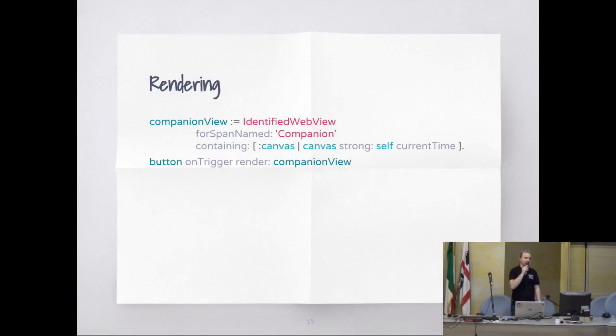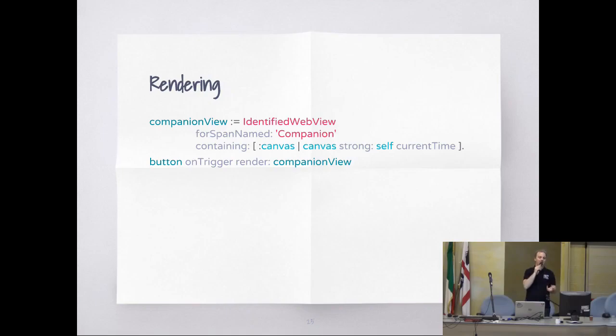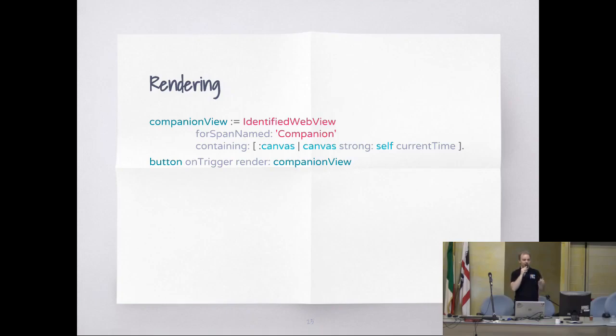This is very common to use. You have an identified web view — I'm giving it a name, so when it generates the ID, it will say 'componentID blah blah blah', making it easier to find in the DOM. And this just renders a strong tag with the current time. I'm saying: button on trigger, render this view.